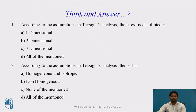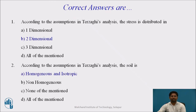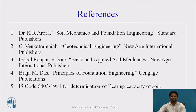You may pause the video now and give the correct answers. According to the assumptions in Terzaghi's analysis, stress is distributed in two dimensions, and the soil is homogeneous and isotropic. However, a key limitation of Terzaghi's bearing capacity theory is that in reality, soil is often heterogeneous and anisotropic.